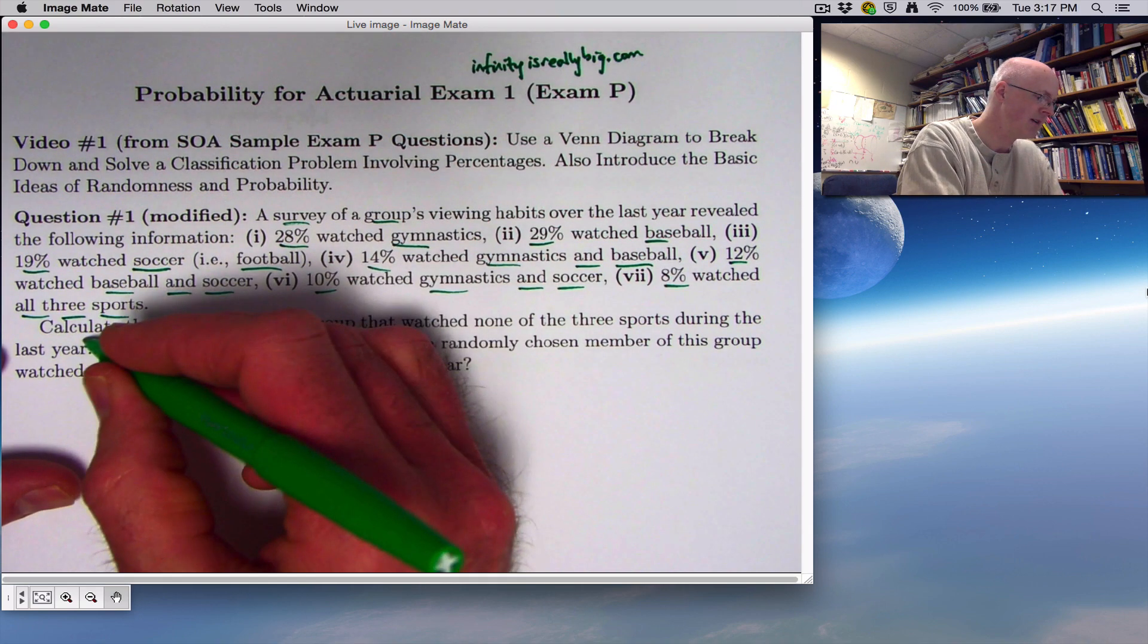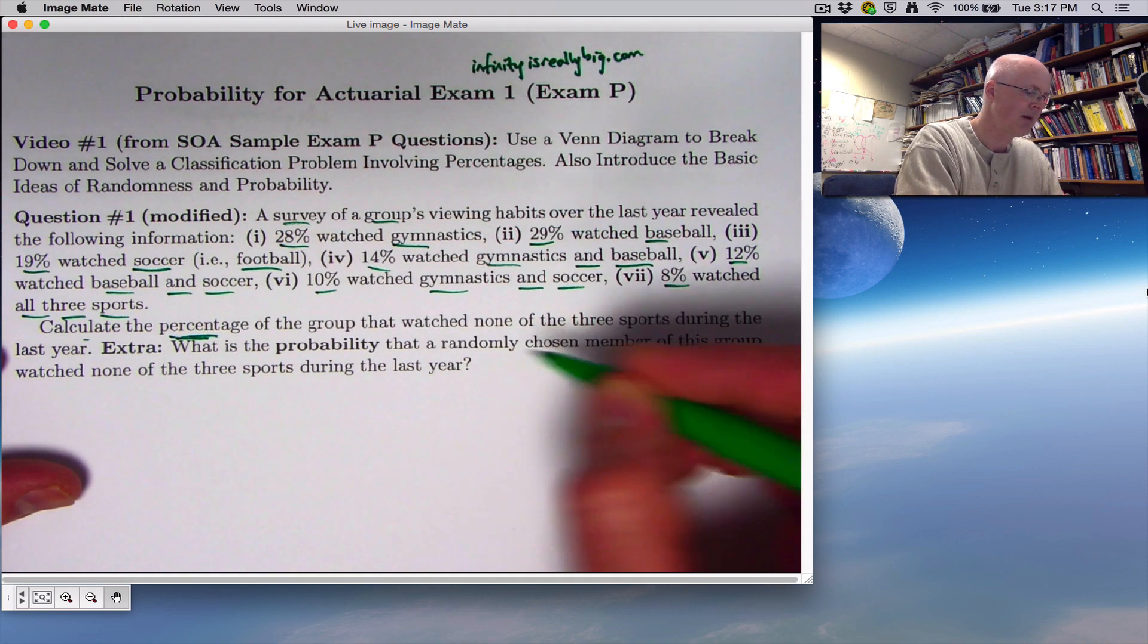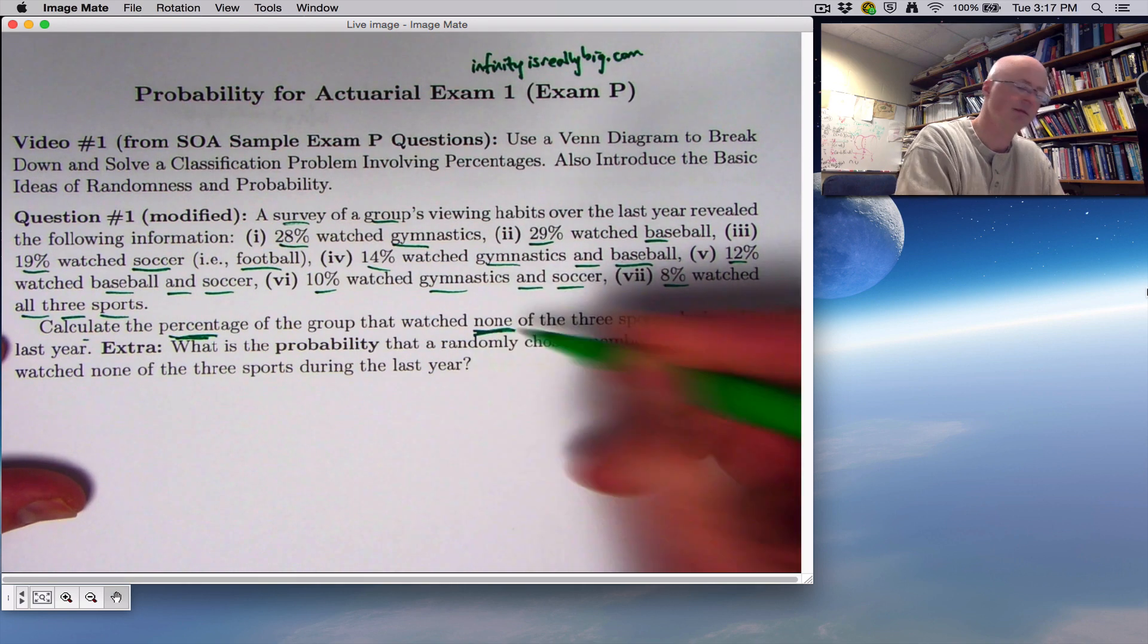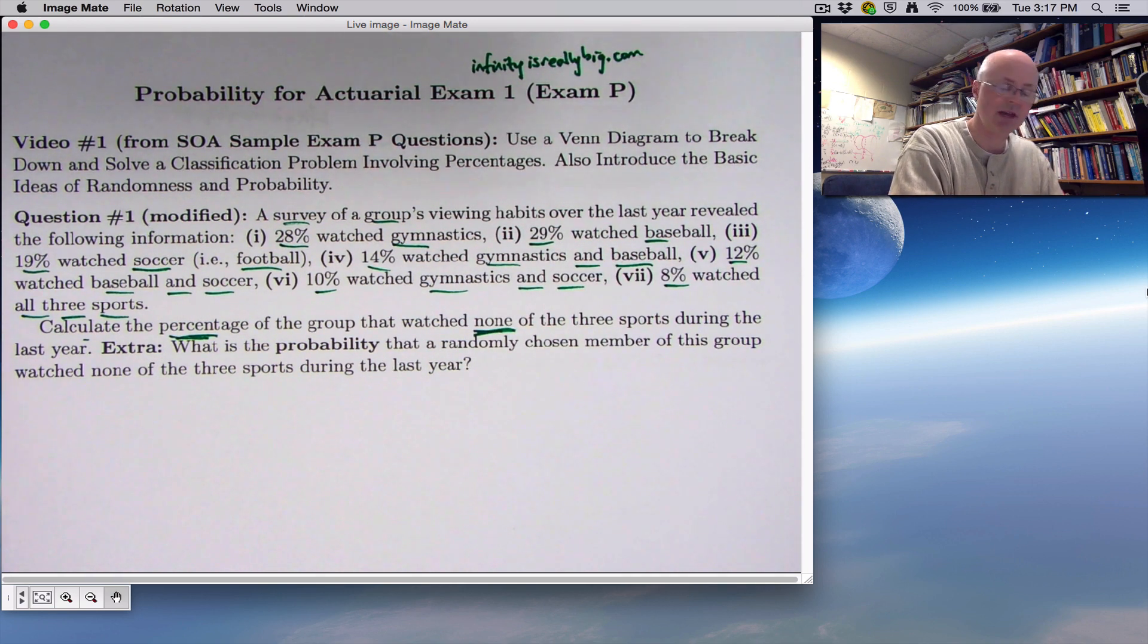Our goal is to calculate the percentage of the group that watched none of these three sports during the last year. And the extra question: what is the probability that a randomly chosen member of this group watched none of the three sports during the last year? And again, the answer to this is going to be the same as the answer to the first question.